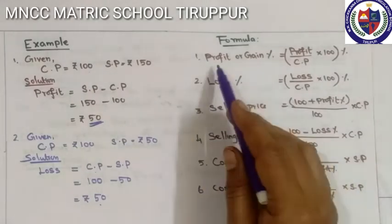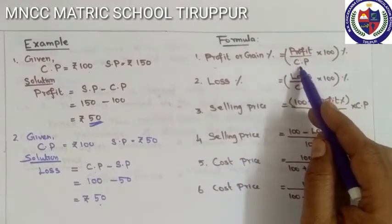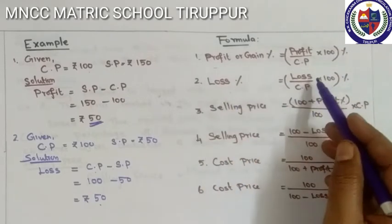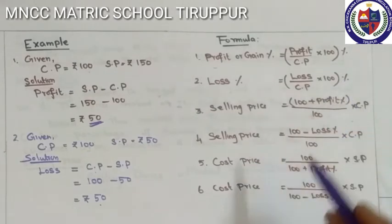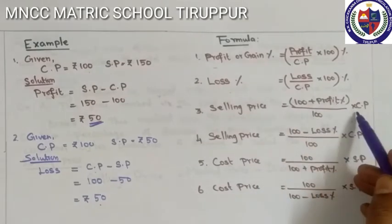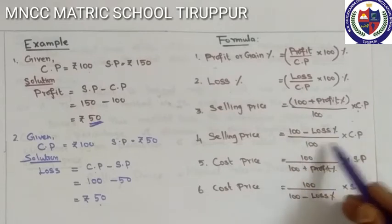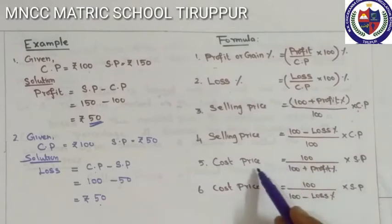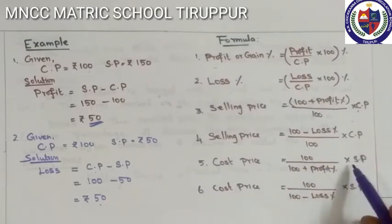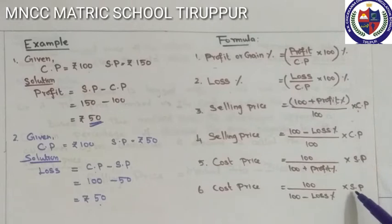Next, we see the formulas. Profit Percentage equals Profit divided by CP into 100. Loss Percentage equals Loss divided by CP into 100. Selling Price equals (100 plus Profit Percentage) divided by 100 into CP. Selling Price equals (100 minus Loss Percentage) divided by 100 into CP. Cost Price equals 100 divided by (100 plus Profit Percentage) into Selling Price. Cost Price equals 100 divided by (100 minus Loss Percentage) into Selling Price. Note the formula.